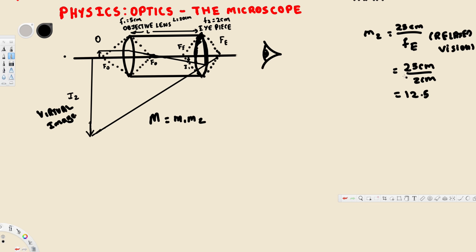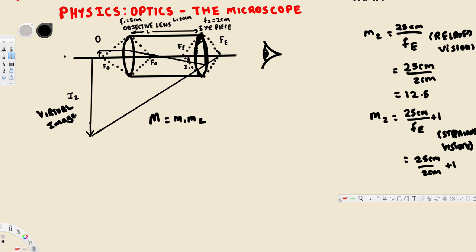For strained vision, we add one to the formula: M2 equals 25 centimeters divided by FV plus 1. With FV equal to 2 centimeters, this gives 25 divided by 2 plus 1, which equals 12.5 plus 1, giving a magnification of 13.5 for the eyepiece under strained vision.